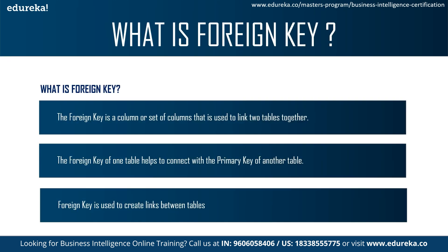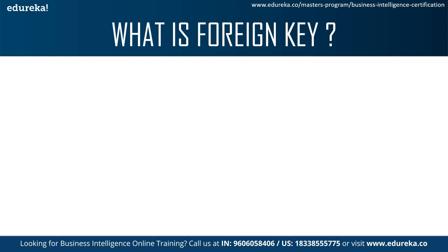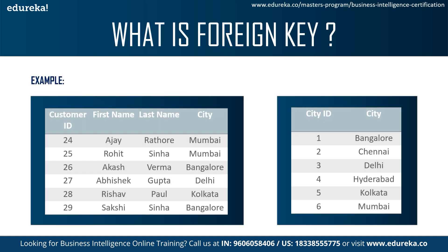Next, let's talk about what is a foreign key. When we set a column as a foreign key, the intention is to link two tables together. A key point is that the foreign key of one table is used as the primary key in another table — it helps to create links between tables. Here we have two tables: a customer table and a city table. We can consider city ID as the primary key in the city table and customer ID as the primary key in the customer table.